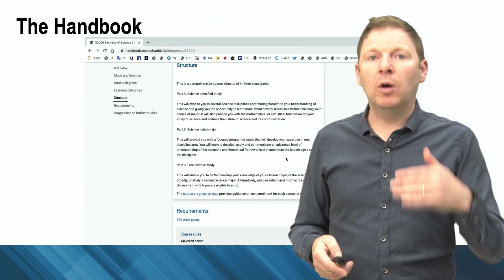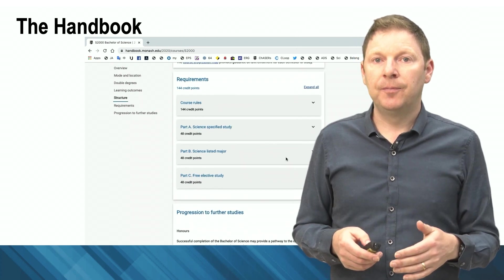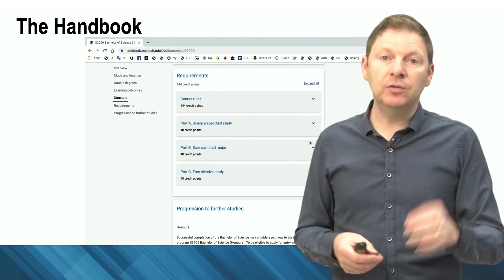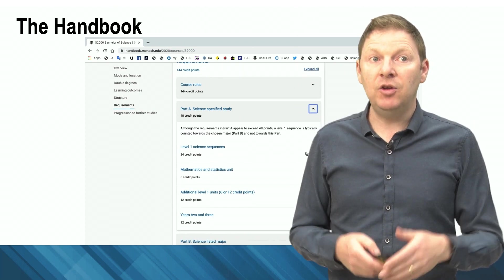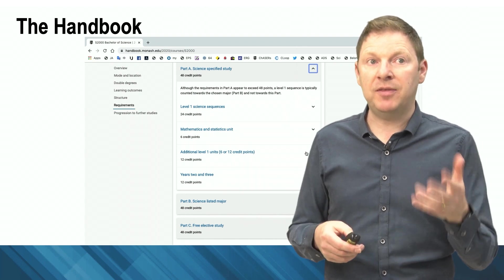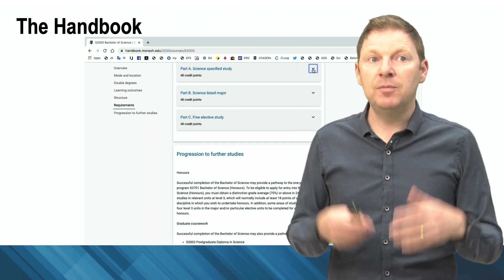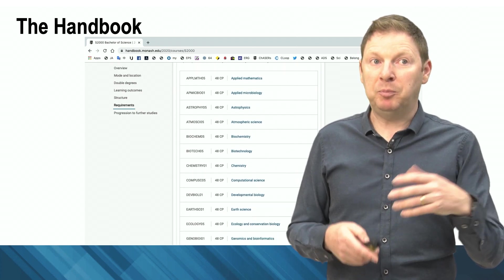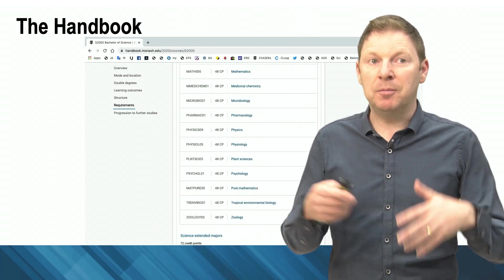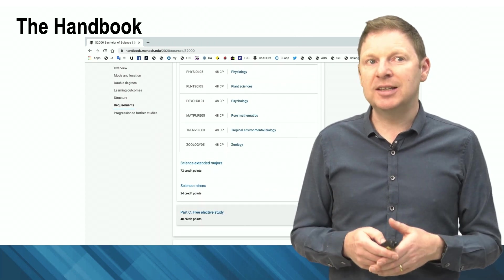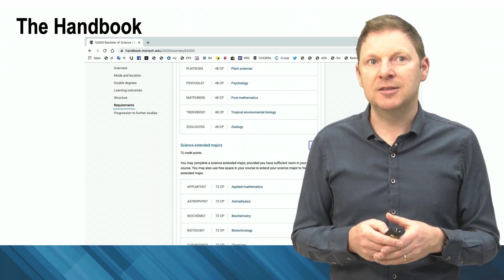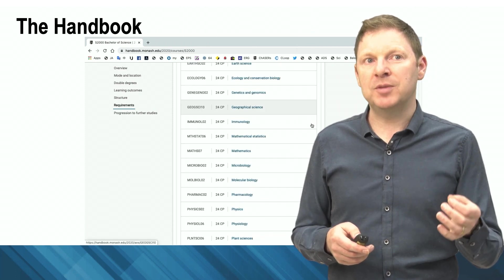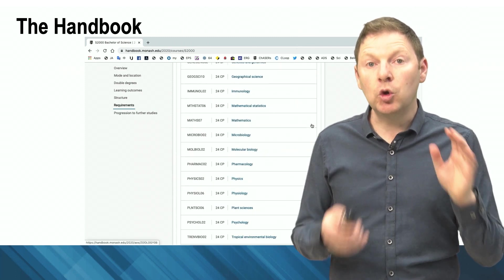And then we get to the structure. So the handbook will show you what parts there are to the course. There are course rules and things that you must do to fulfill the requirements of the course. Here you can see that you have to do some level one sequences, you must do a maths and a stats unit, and you must do a certain number of level two and level three units. Part B is the areas of study, or if you like, the majors and the minors. You can see there's a long list of these things. There's a separate drop down for the extended majors and then another drop down for all of the minors. So have a good look through these.